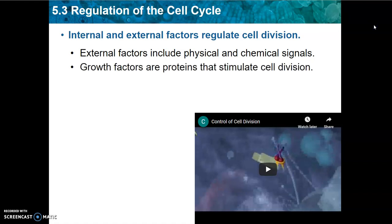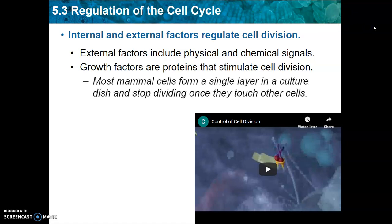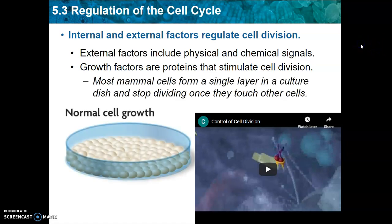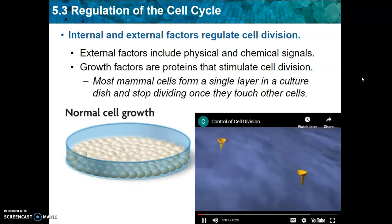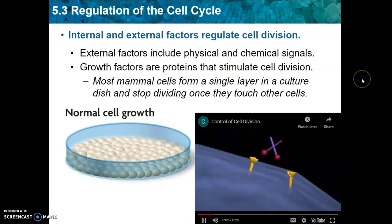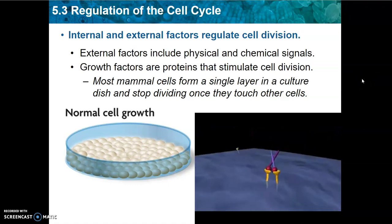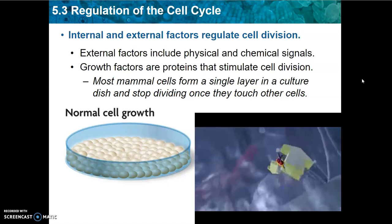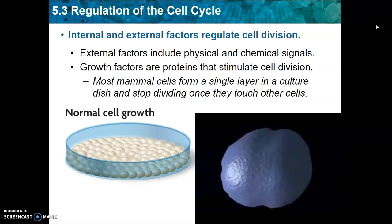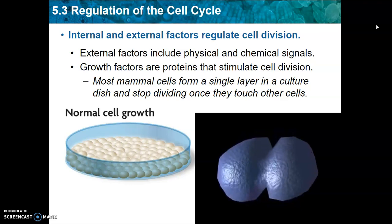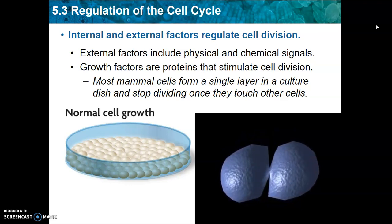Growth factors are proteins that stimulate cell division. Most mammal cells will form a single layer in a cultured dish and stop dividing once they touch other cells. A normal cell will divide only when it receives a chemical signal telling it to do so. These signals are interpreted in the nucleus and the cells reproduce their genetic information and divide into two identical daughter cells through a process called mitosis.